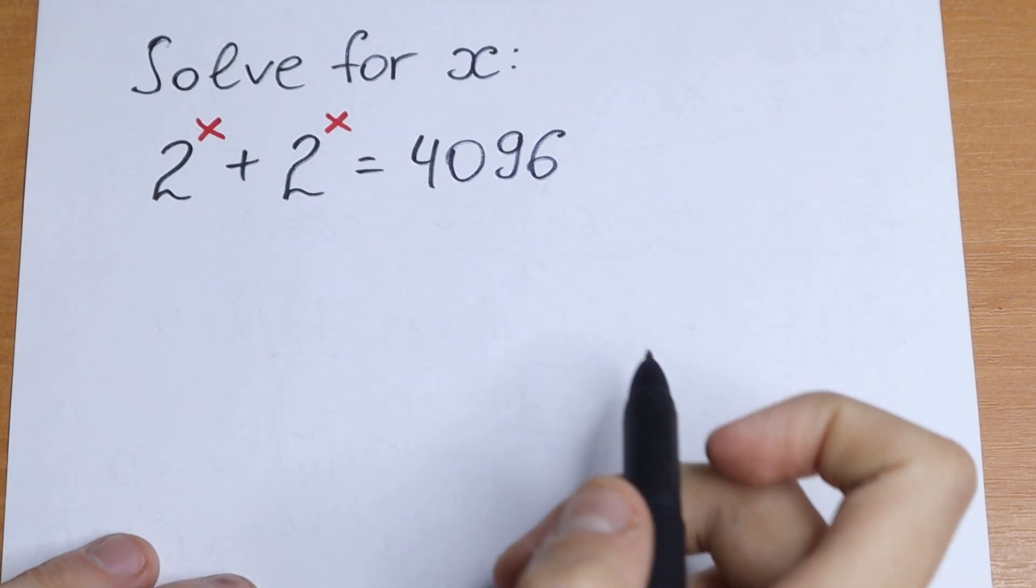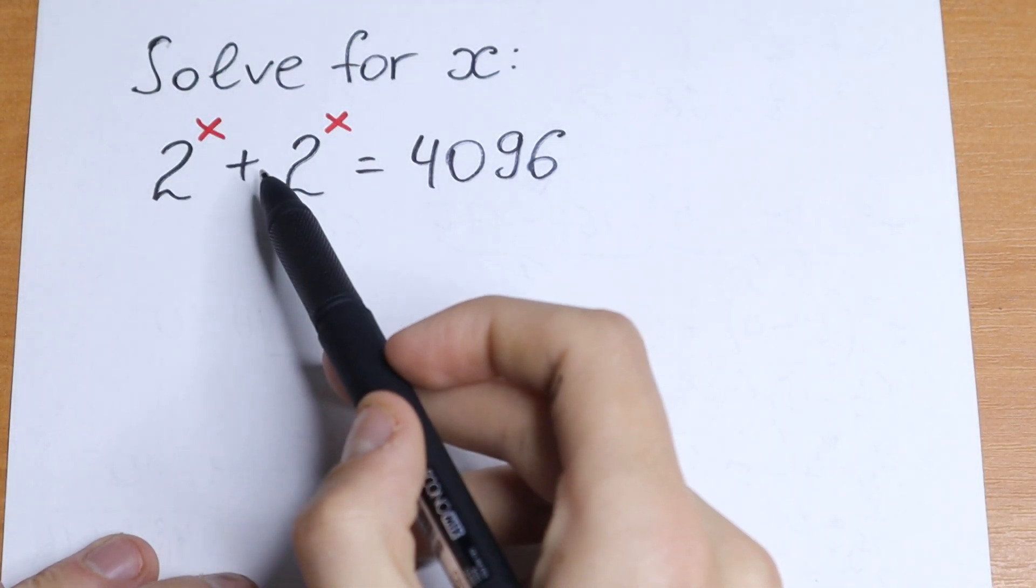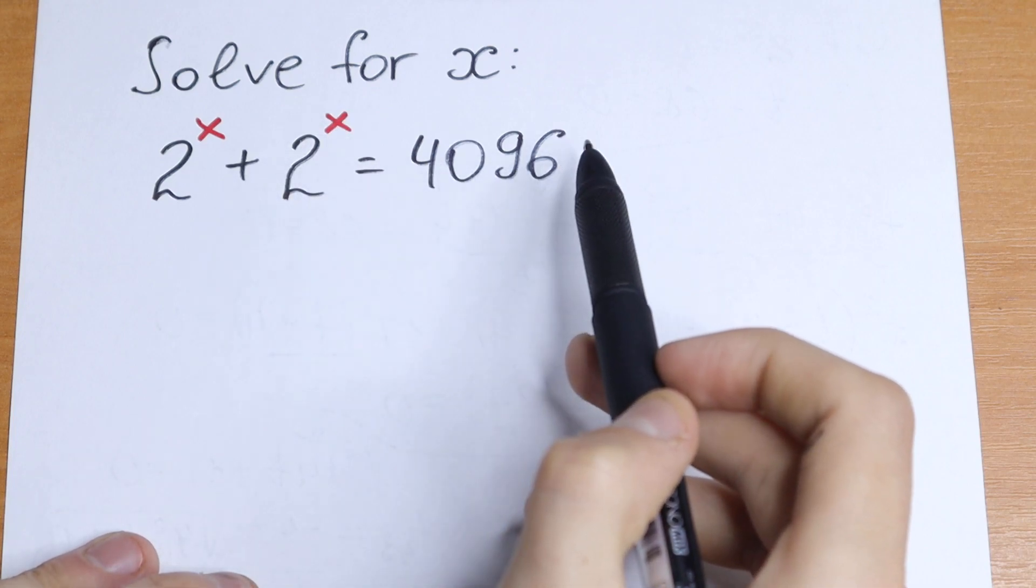Hello everyone, welcome back to MathMove. Today we have an interesting equation: 2 to the power x plus 2 to the power x equal to 4096.